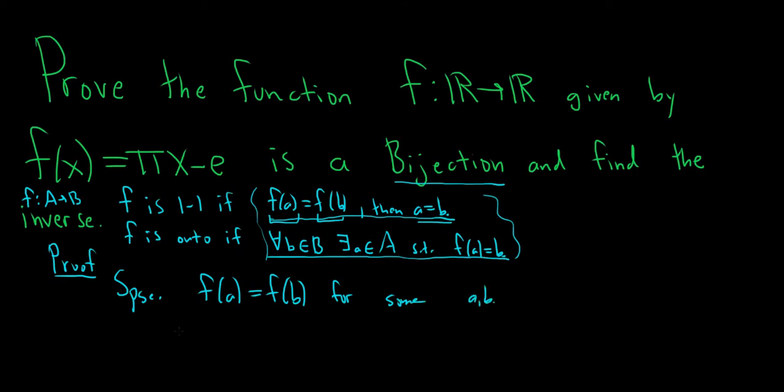So what is f(a)? f(a) is πa - e. f(b) is πb - e. You can simply add e to both sides. So you get πa = πb, divide by π, so a = b. Really simple. This shows f is one-to-one.